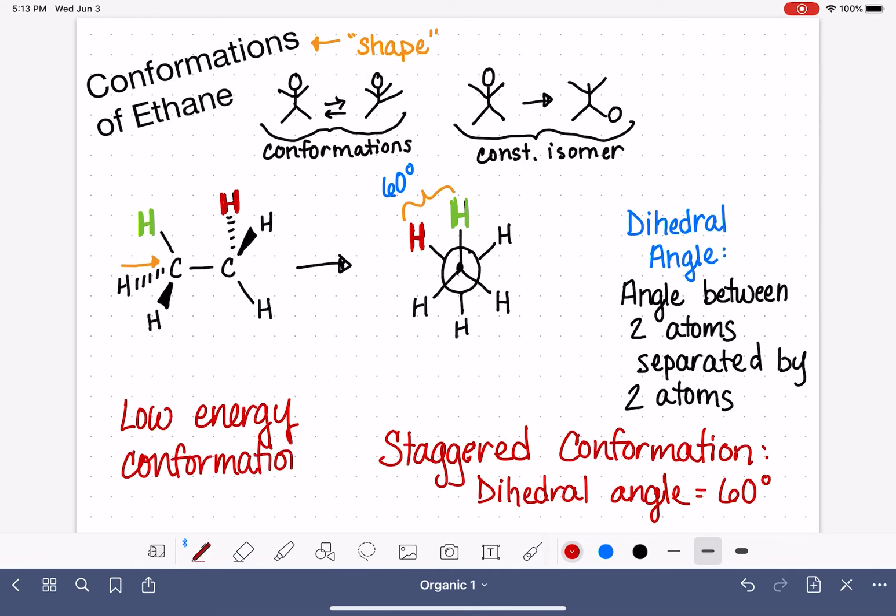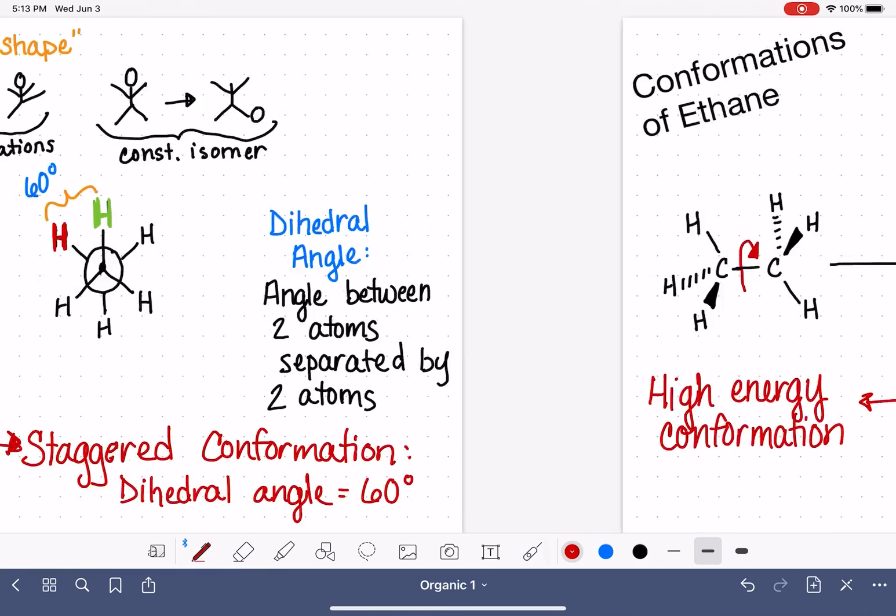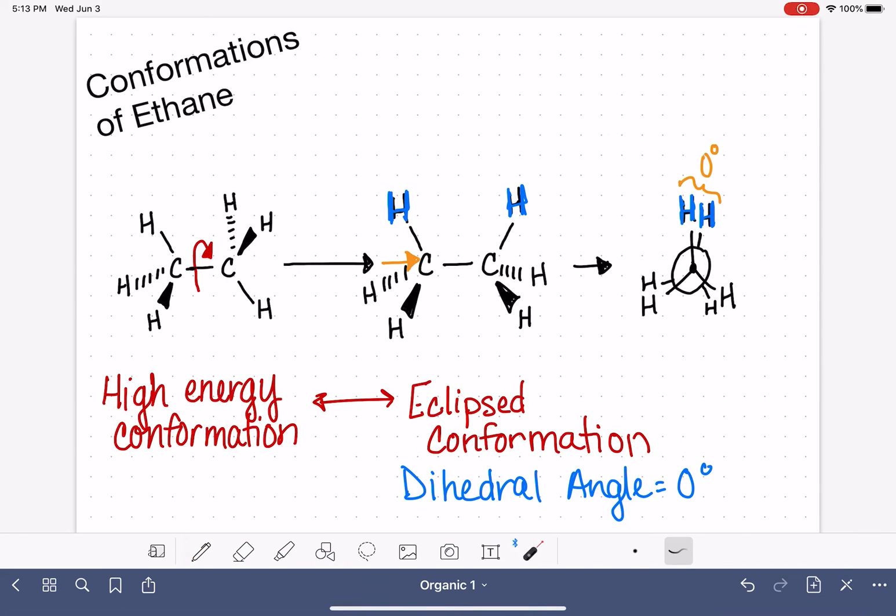And the word that we use to describe the position of the hydrogen atoms in a high-energy conformation, like an eclipsed conformation, is called steric hindrance. Steric hindrance is the term that we use to describe a conformation or a situation where the atoms are closer together than they need to be, or too close together.